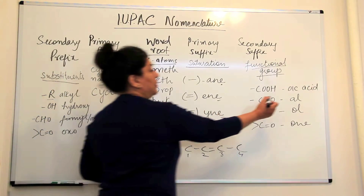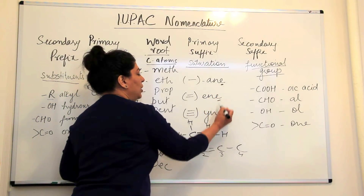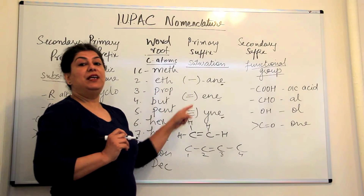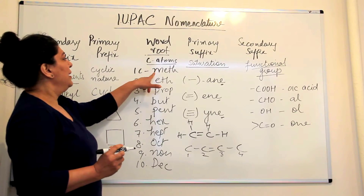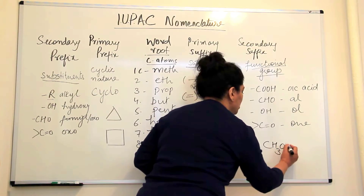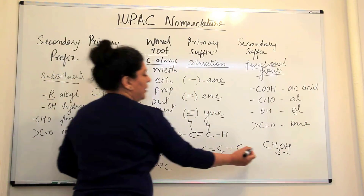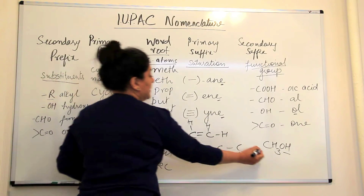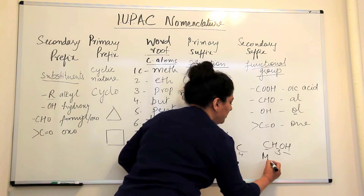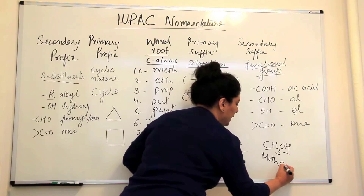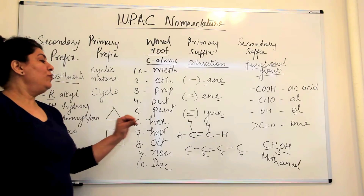Remember, whenever we write the secondary suffix for the functional group, we drop the last vowel of the primary suffix '-ane,' '-ene,' or '-yne.' For example, if you have CH3OH, it has -OH which means it's an alcohol. There is only one carbon atom, so the word root is 'meth.' Since it has only single bonds, it is '-an-,' and since it has -OH, the compound is named methanol.